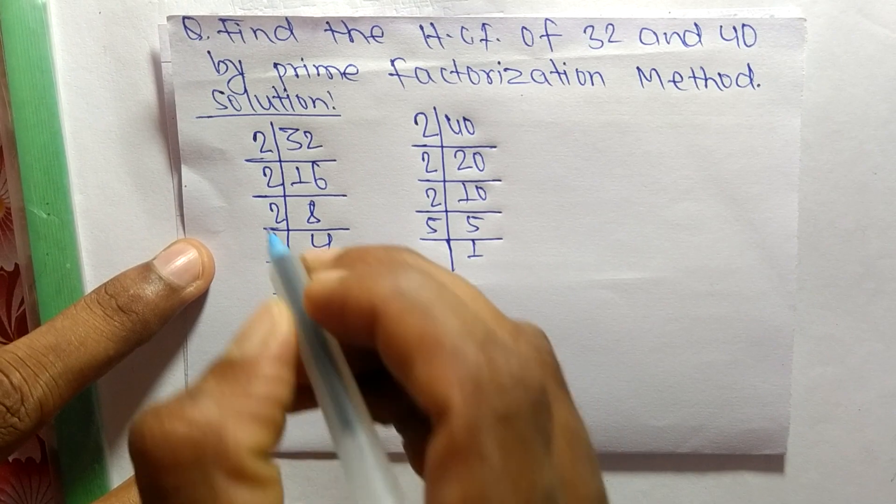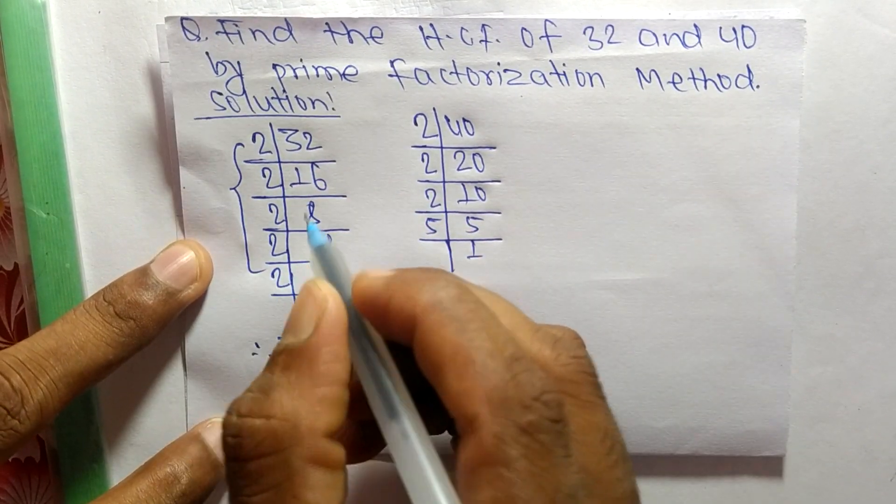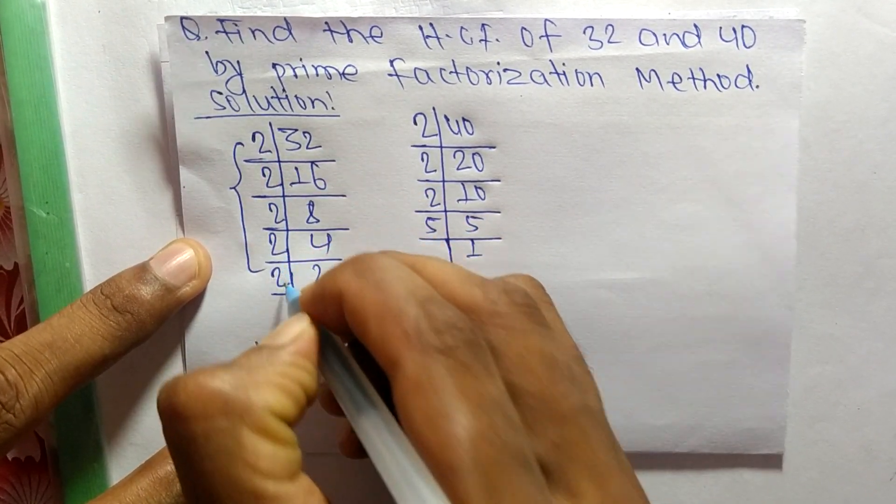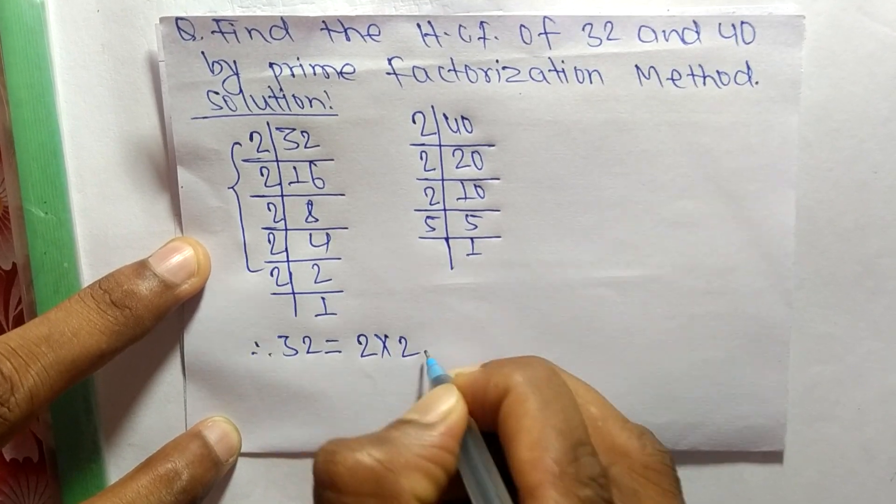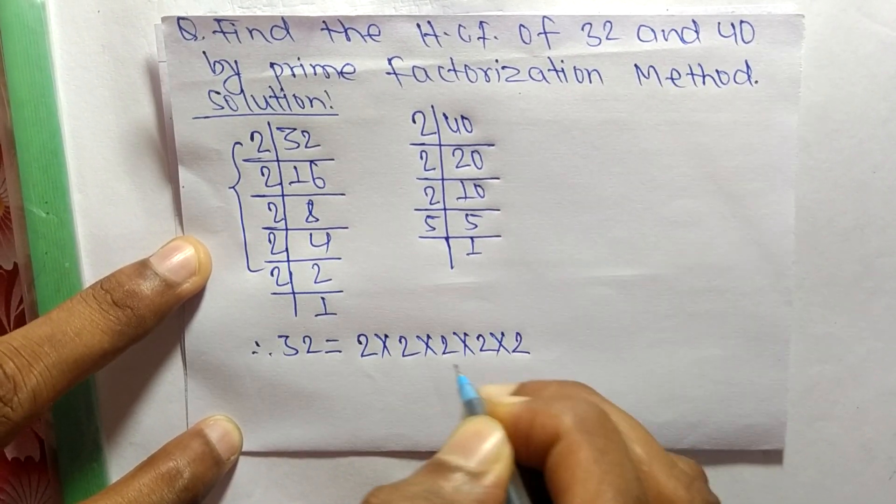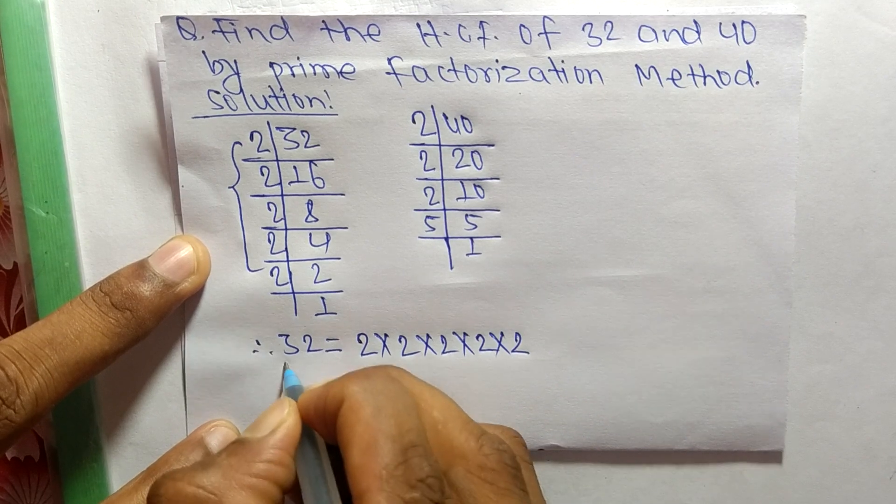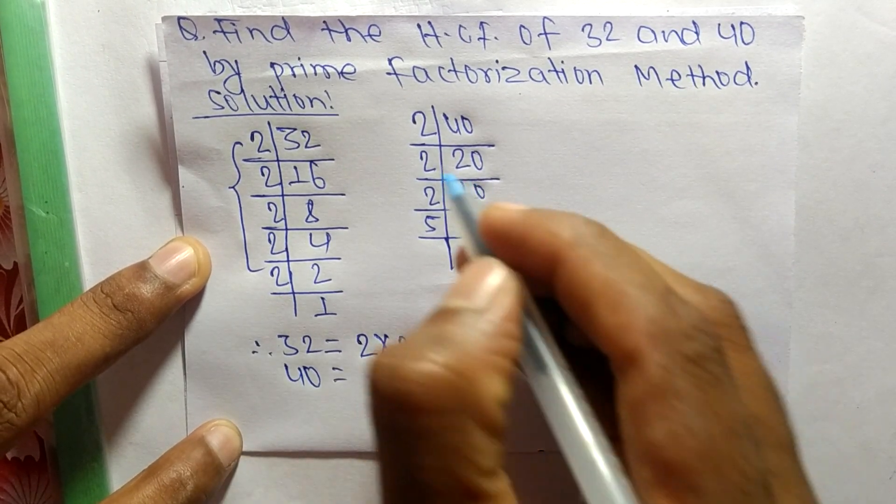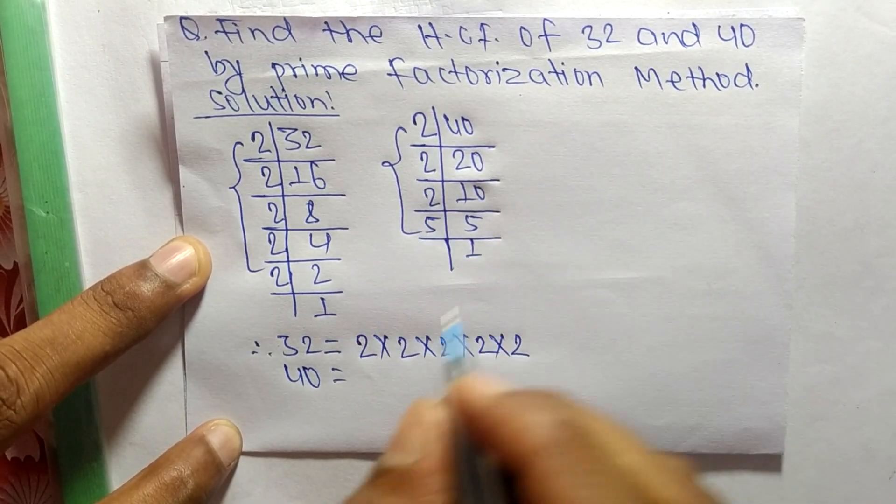From these prime factors we can write 32 equals 2 times 2 times 2 times 2 times 2, which is five 2s. Similarly, 40 equals 2 times 2 times 2 times 5.